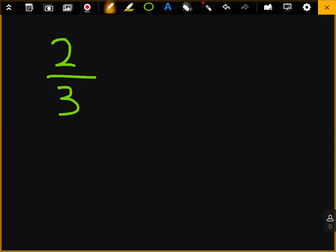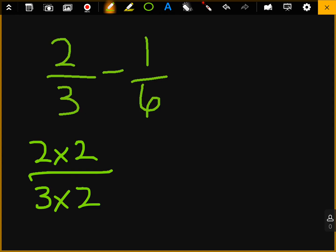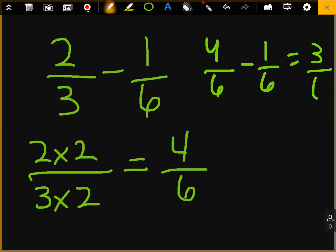All right. The last example is 2 thirds minus 1 over 6. Now, I'm going to say, I know 3 goes into 6 two times. So I'm going to do 2 times 2 and 3 times 2. And the reason I multiply the 2 by 2 is because whatever you do to the bottom, you have to do to the top. So 2 times 2 is 4. 3 times 2 is 6. So I'm going to take 4 over 6 minus 1 over 6. And that gets me 3 over 6.